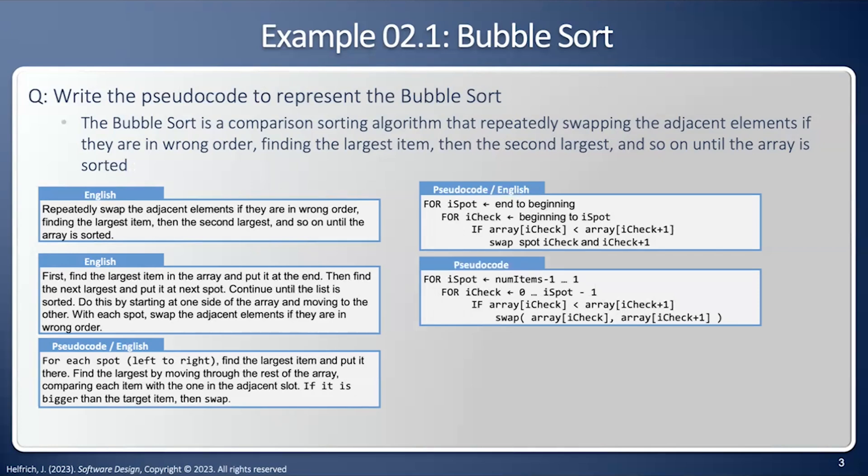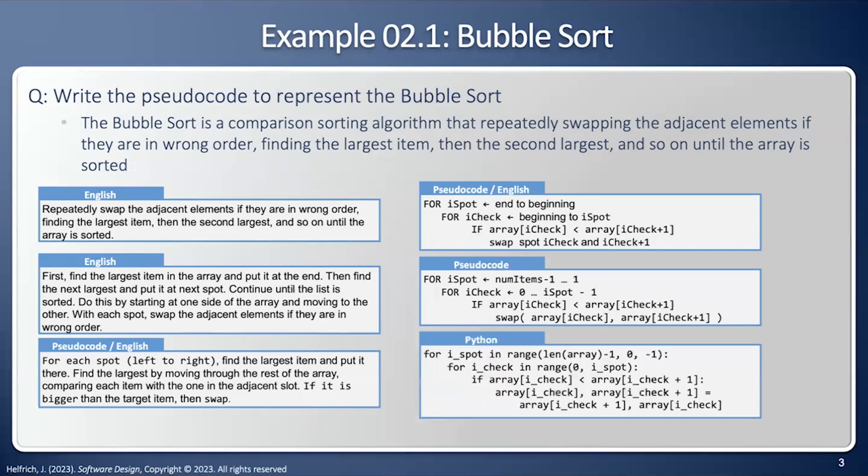The final step is to convert that pseudocode into the actual programming language. In this case, we're using Python. Notice Python has the colon after the for and the for and the if. Python has a really strange way of doing for loops. We have to use the range iterator. And we can swap using a tuple. If I was going to turn this into C++ or Java or JavaScript, then the syntax would be different. But the pseudocode is designed to be language independent. So it should be equally easy to convert the pseudocode into any programming language of my choice.